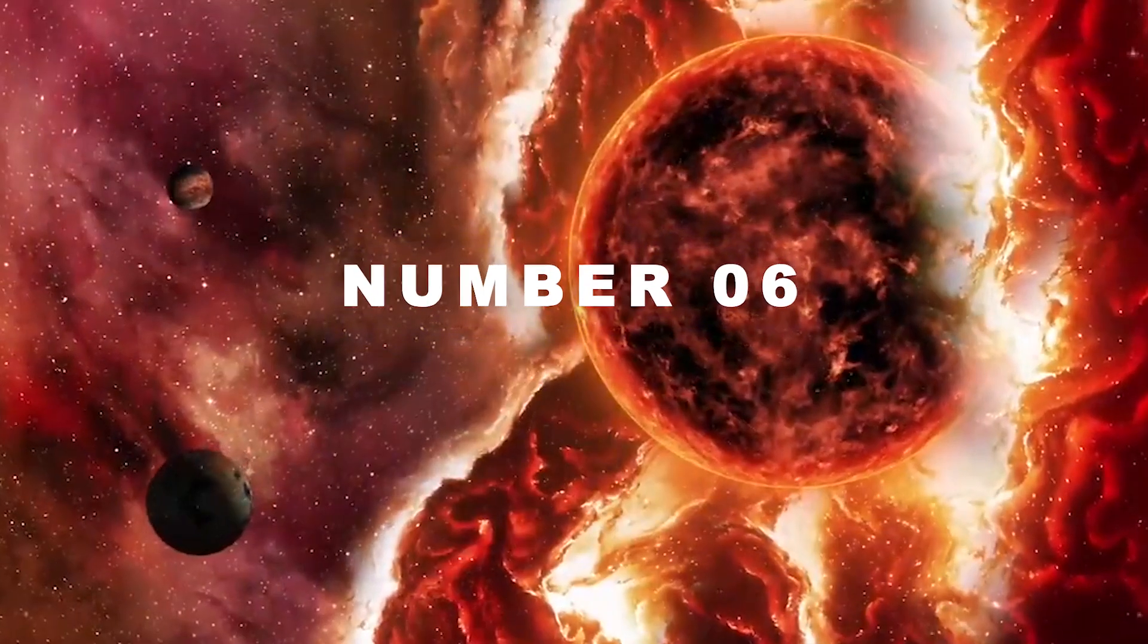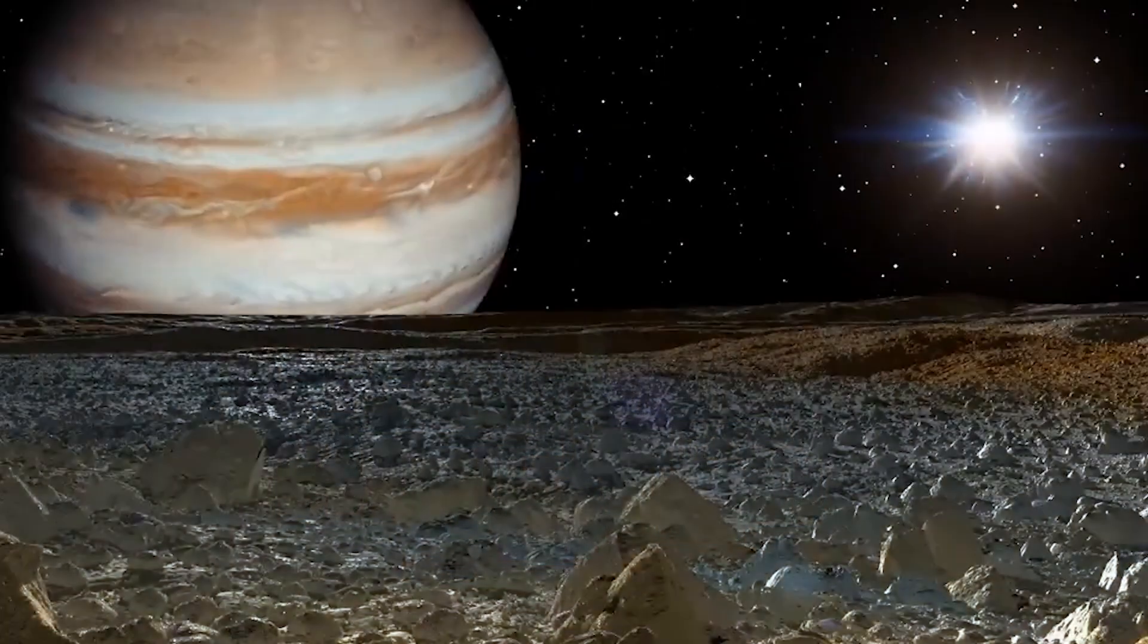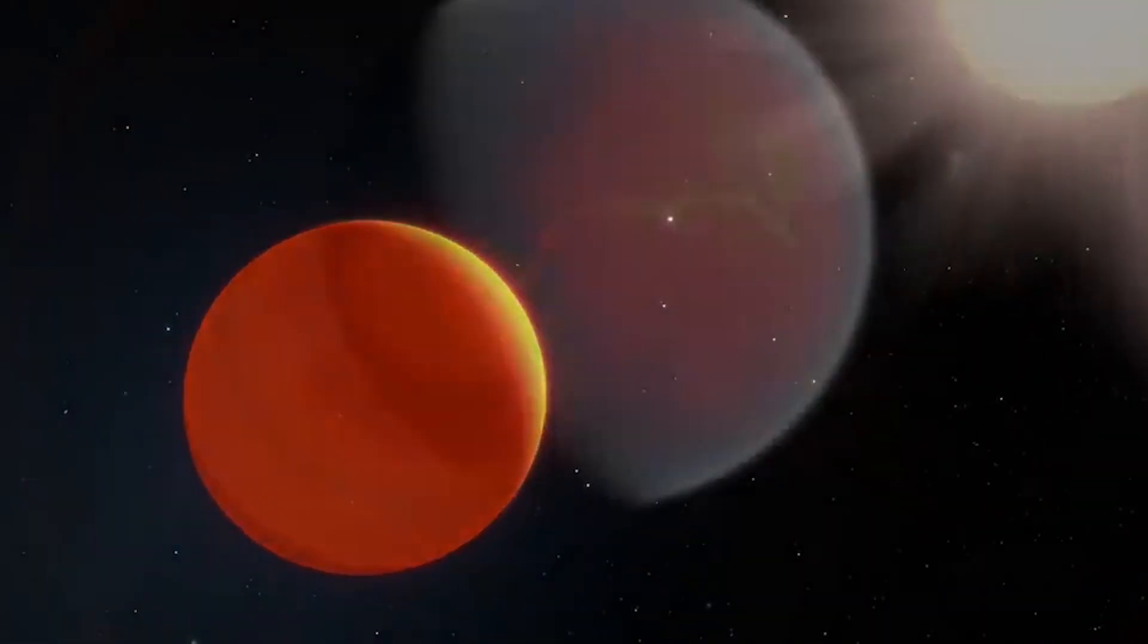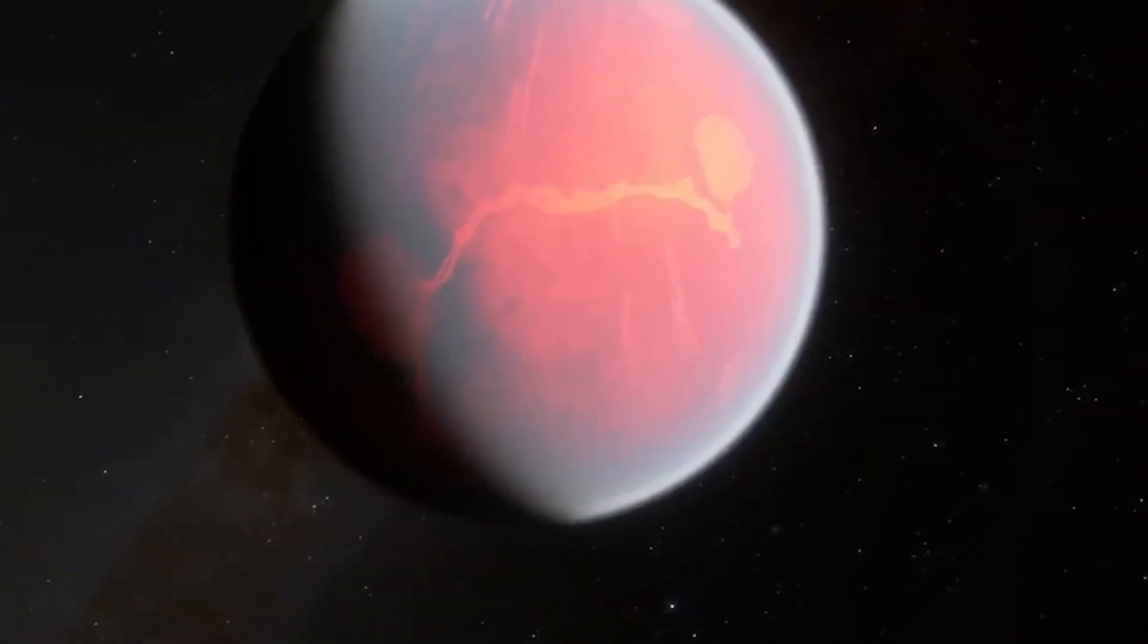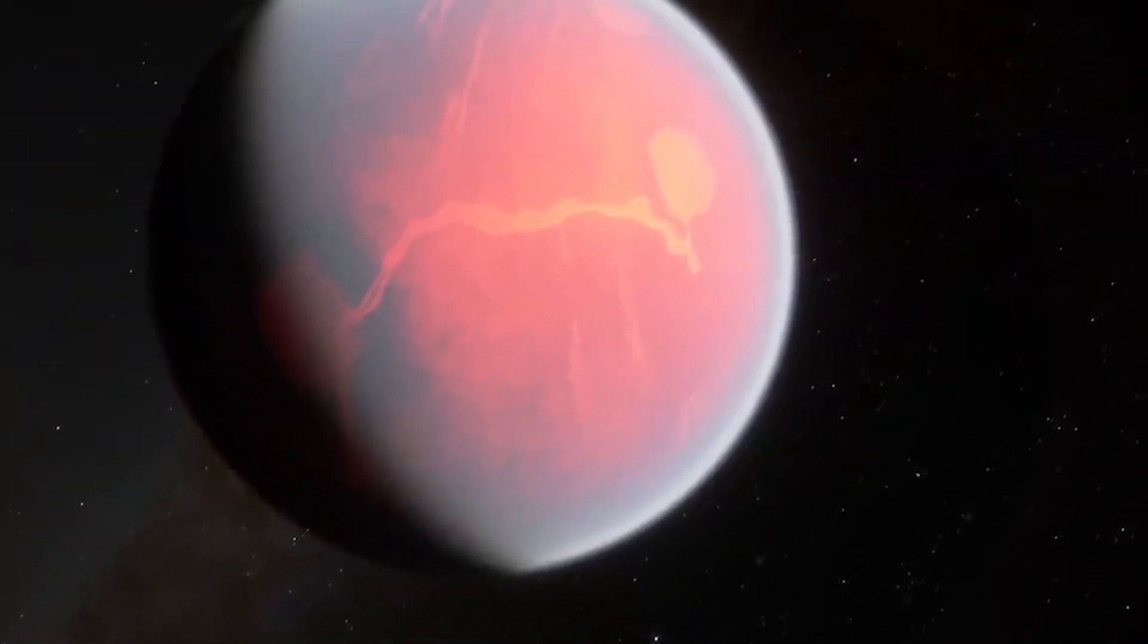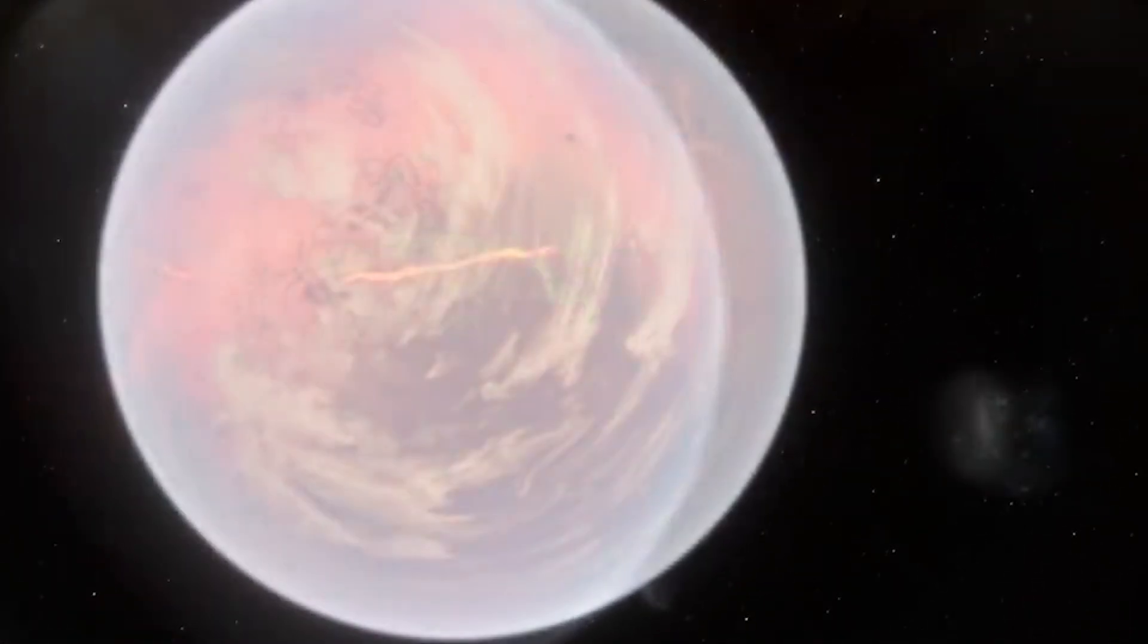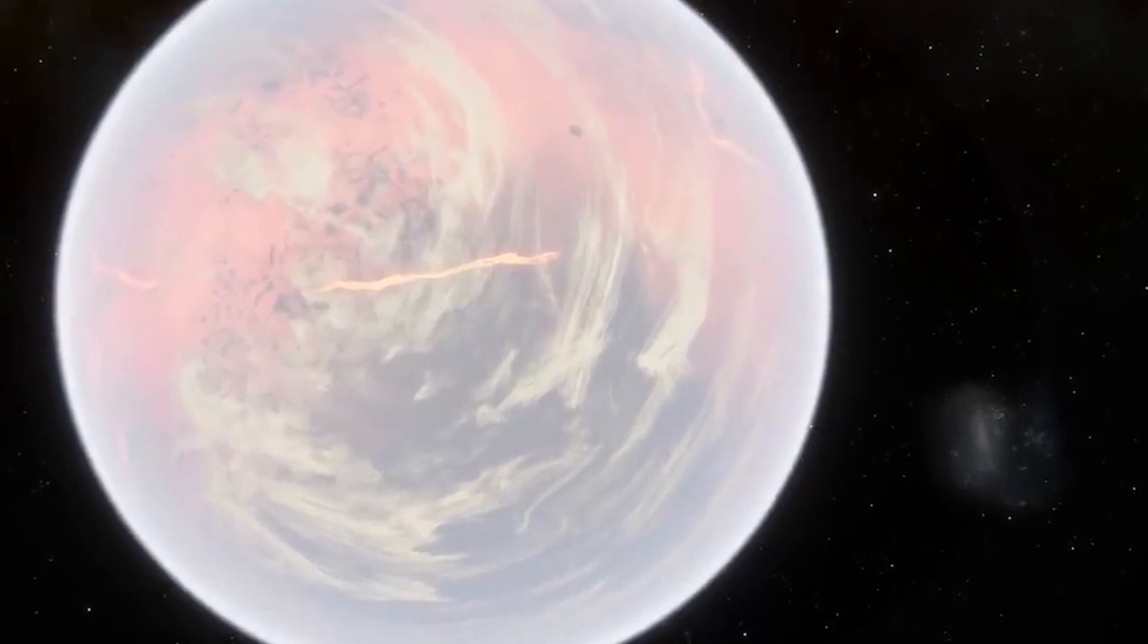Number 6. The Fermi Paradox. With an estimated 2 trillion galaxies in the observable universe, each hosting billions of stars and potentially habitable planets, the Fermi Paradox poses a puzzling question. If the probability of extraterrestrial life is high, where is everyone?